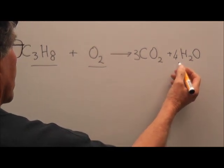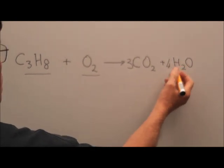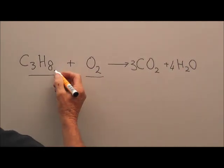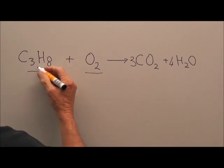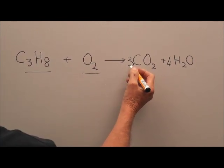So we've now got four hydrogens, or eight hydrogens rather. Four H2s on one side, and we've got eight on the other side. We've got three carbons here, we've got three carbons there. The only thing that we still have to sort out is the oxygens.